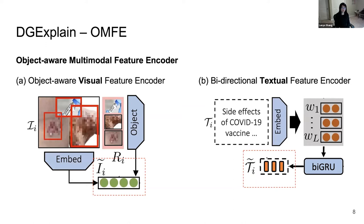The OMFE module contains two parts. The first is an object-aware visual feature encoder that learns abstract visual information from the news image — encoding both the entire image for comprehensive understanding and the identified meaningful objects within it. The second part is a bidirectional textual feature encoder that encodes textual features and learns semantic representations from the text and user comments.